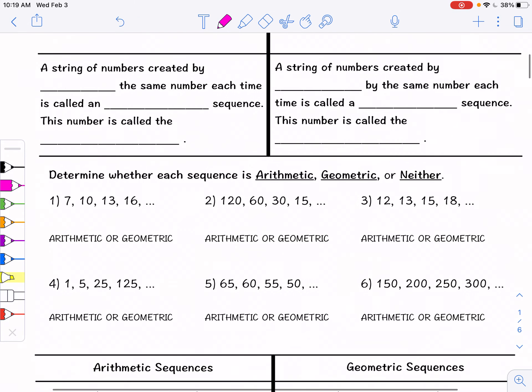So we're going to take a look at some vocabulary. A string of numbers created by adding the same number each time is called an arithmetic sequence. Now this also works for subtracting because you can just add a negative. So adding and arithmetic both start with A. The number that you continue to add or subtract over and over again is called a common difference because the difference between each pair of numbers is the same or common.